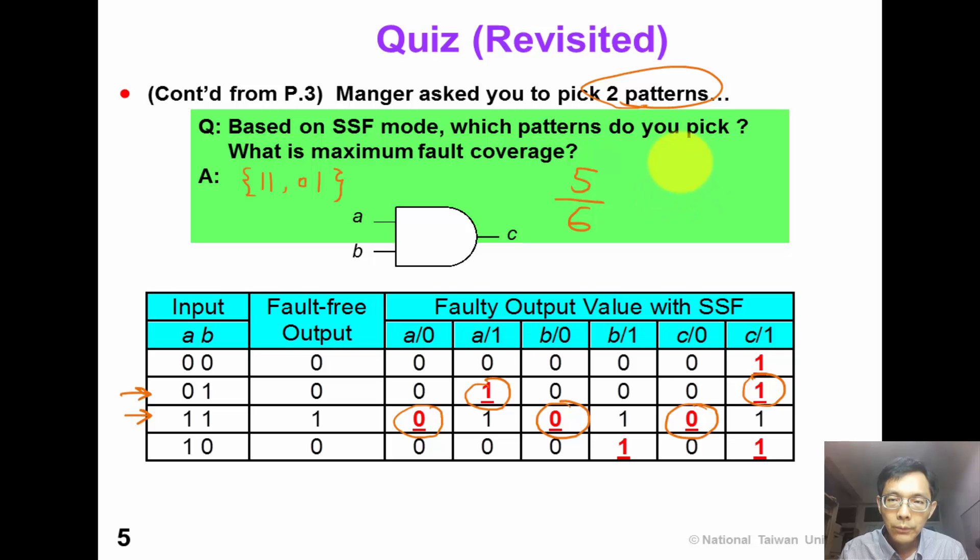If we choose 1-1, 0-0, the fault coverage is only 4 out of 6. So now you know the importance of fault model.